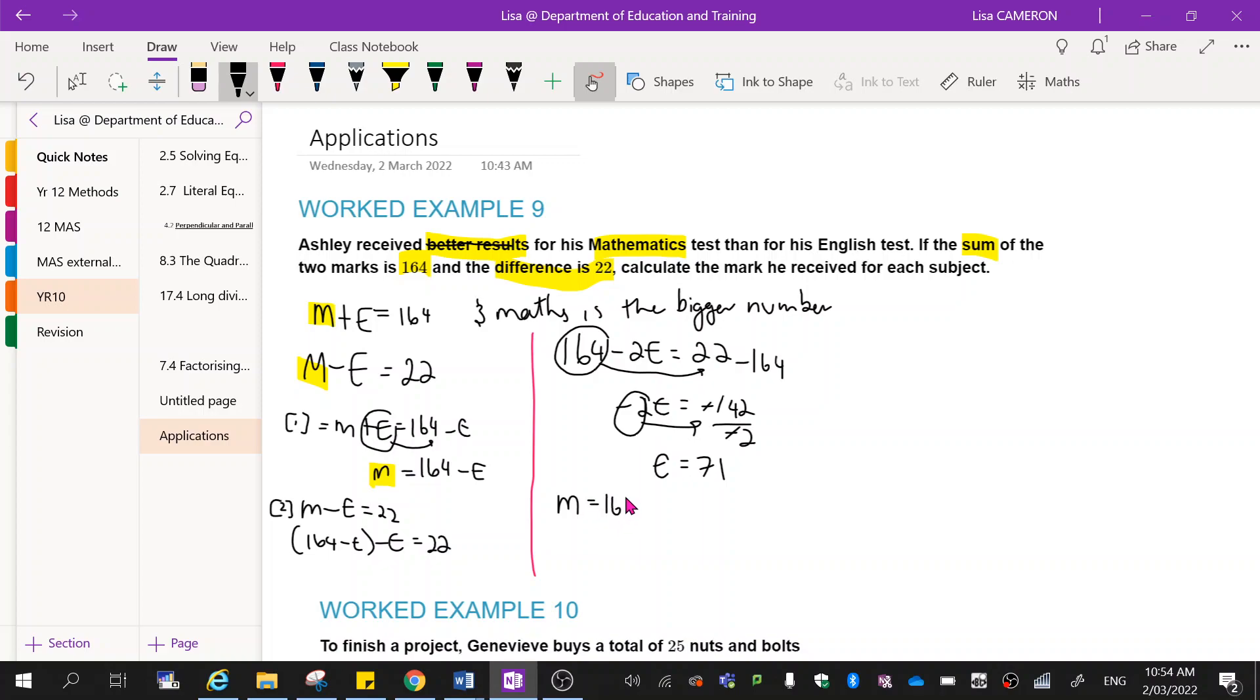m is equal to 164 minus e, which comes from here. So then m is equal to 164 minus 71, which is going to give me 93. So therefore maths is 93.